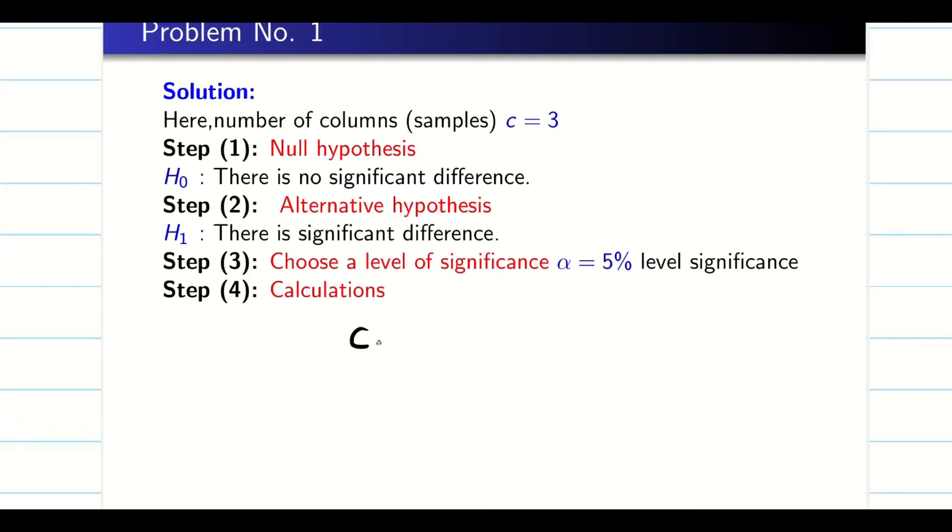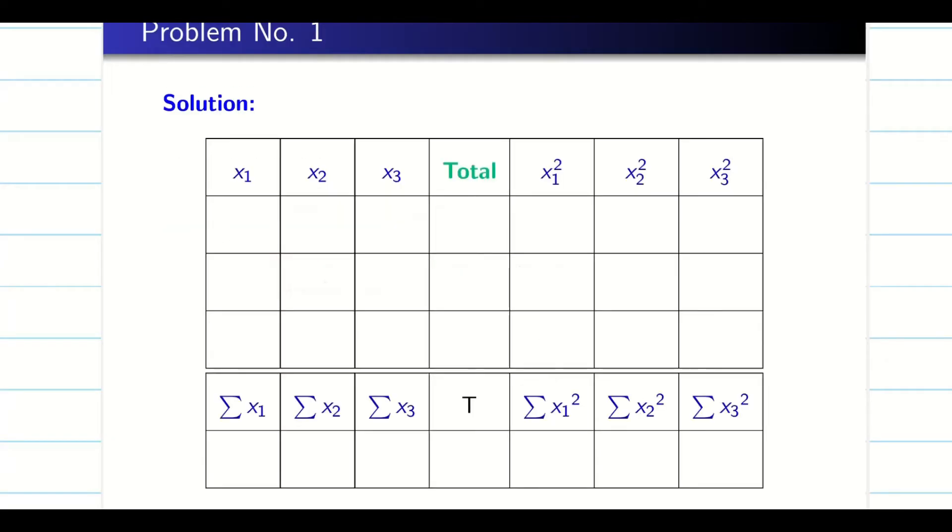Next, we have to go for calculations. Since it is one-way ANOVA, C1, C2, C3, we have three columns and then we are going to have the total on this. So we are going to form a table like this. Instead of C1, I am taking X₁, X₂, X₃, and you write total and you can write the grand total at the bottom. Now for X₁, I am going to make X₁ square, X₂ square, and X₃ square. Now this X₁ is nothing but according to my question, method 1, method 2, and method 3.